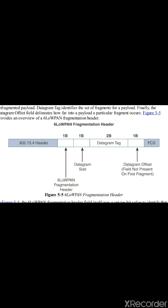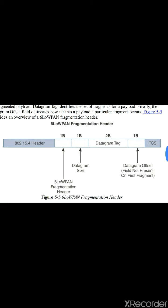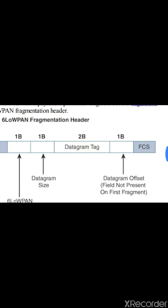To handle this situation, large IPv6 packets must be fragmented across multiple 802.15.4 frames at Layer 2. Let us go through the diagram of the 6LoWPAN fragmentation header. The fragment header is composed of three primary fields.